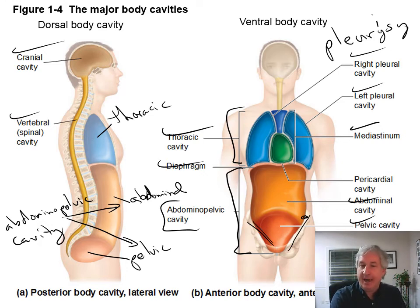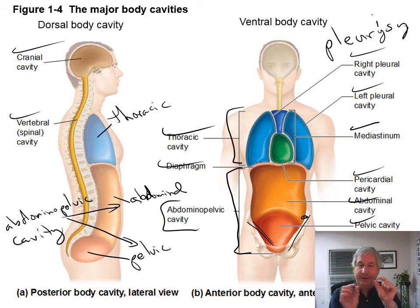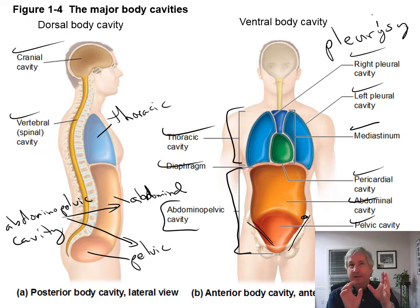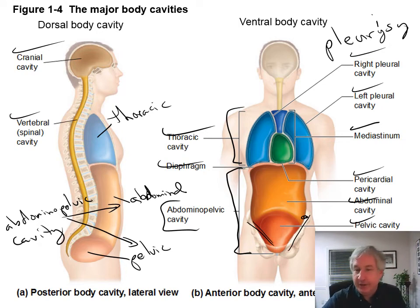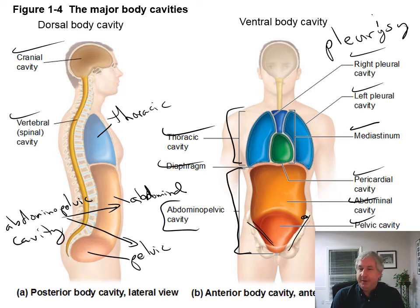We have the pericardial cavity, which is a membrane around the heart. In between the layers of that membrane, there's a little cavity with some fluid in it, just like around the lungs — that's the pericardial cavity. Those are very small, very thin cavities. The regions you'll need to know are the mediastinum, and the right and left pleural cavities and the pericardial cavity — we'll talk about those in more detail in the next few slides.